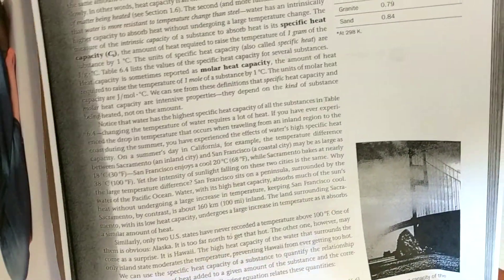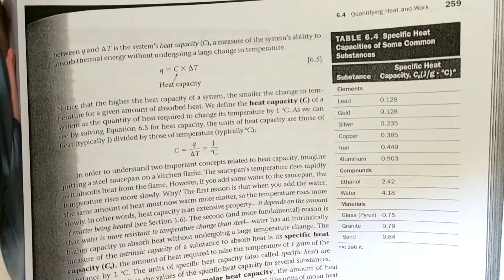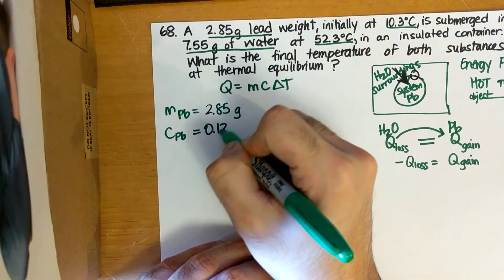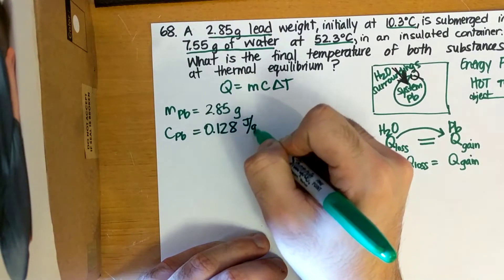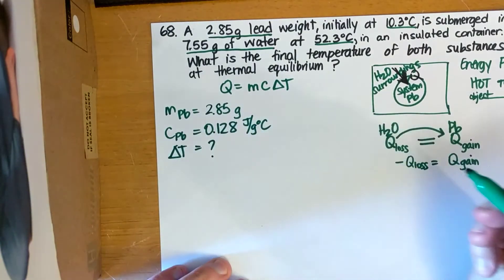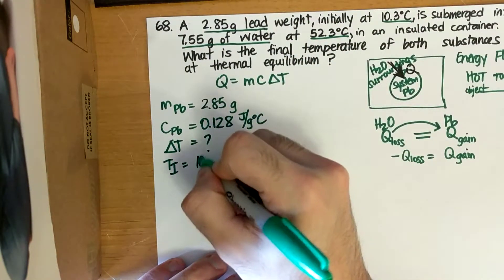Do we know the specific heat capacity of lead? Well, not off the top of our heads, but since this is a textbook question, we have this beautiful table, table 6.4. And it gives us a specific heat capacity of lead is 0.128 joules per gram degrees Celsius. And then delta T, I don't know yet, but I do know that my T initial is 10.3 degrees Celsius.